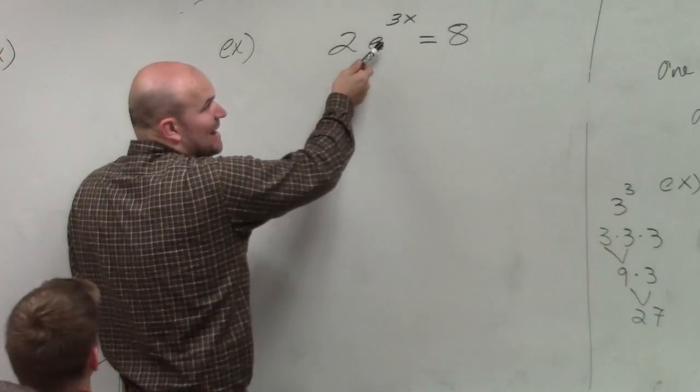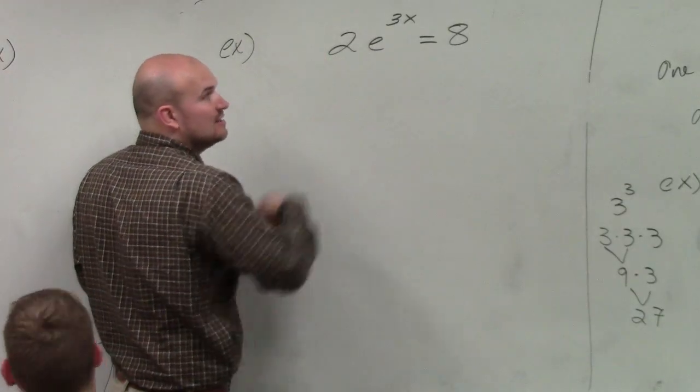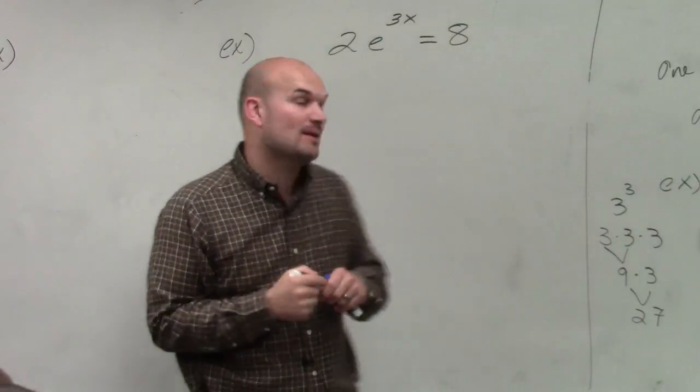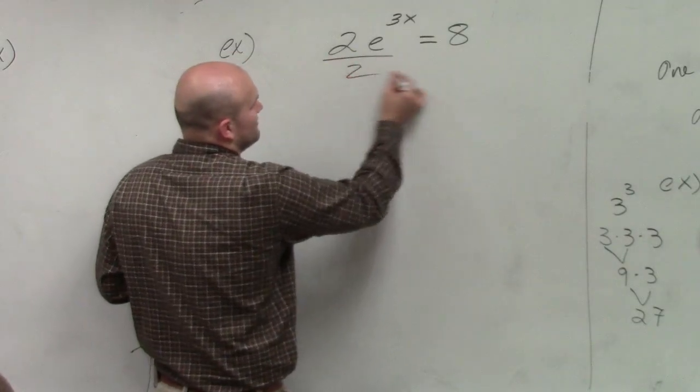You can see right now my exponent is e raised to 3x. Right now, that e raised to 3x is being multiplied by 2, so I need to divide by 2.